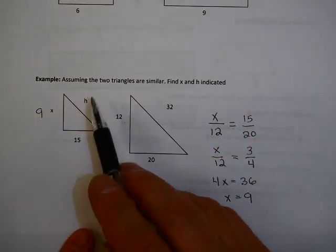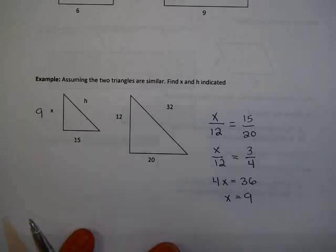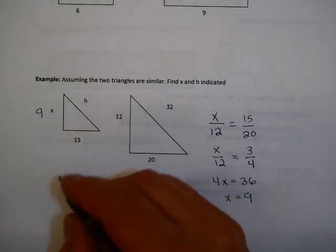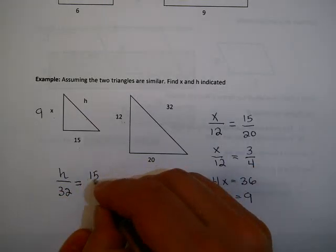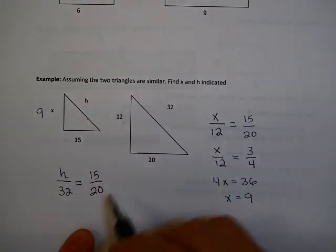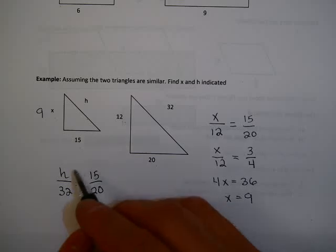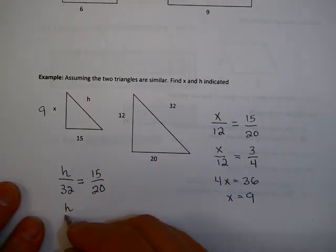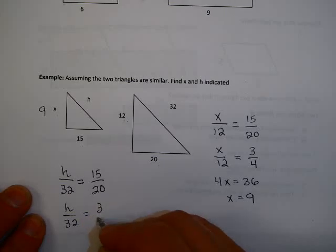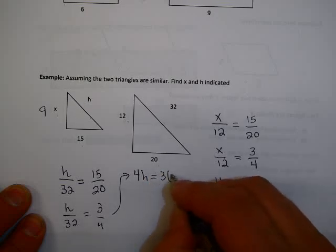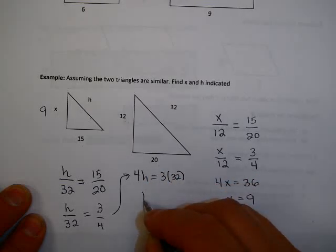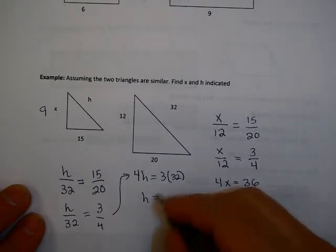Now, for finding h, see if you can find h. You might want to pause the video right now, and then come back in a moment when you have determined the value for h. What I did to find h is I used h over thirty-two. Those are corresponding parts. And I used my fifteen and twenty, again, as corresponding parts. And so, I took fifteen over twenty, and I decided I'm going to reduce that again to three-quarters. Cross-multiplying gives me four h equals three times thirty-two. If you divide both sides by four, you should get twenty-four.